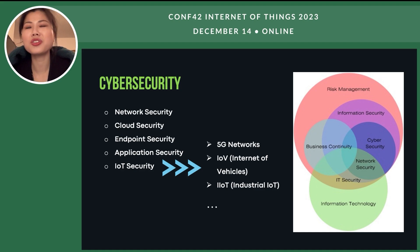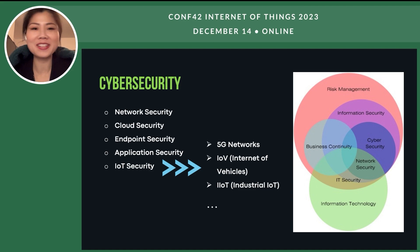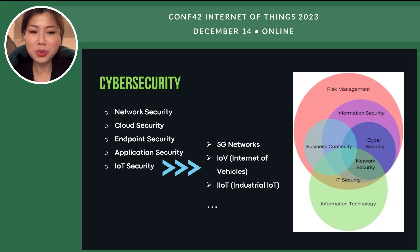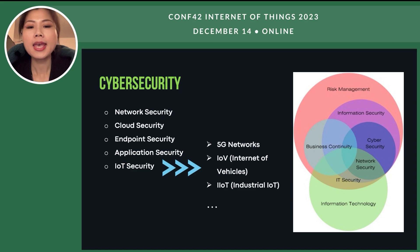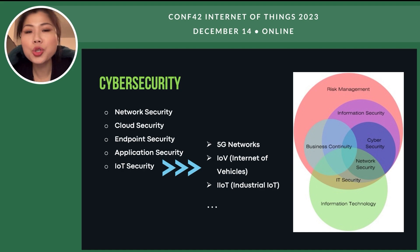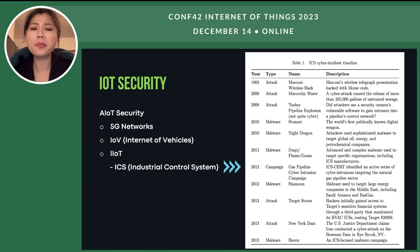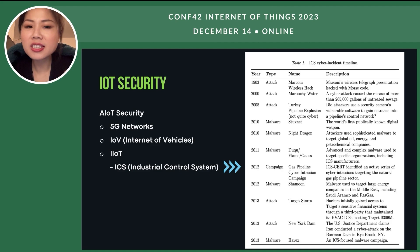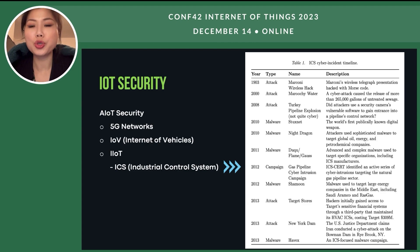Cybersecurity is quite familiar to all of us — getting hacked is related to information security, and cybersecurity belongs to information security. IoT security has been included within cybersecurity. IoT security covers areas like 5G networks, internet for vehicles, and industrial IoT. When we talk about industrial IoT, we definitely need to refer to ICS — Industrial Control Systems.